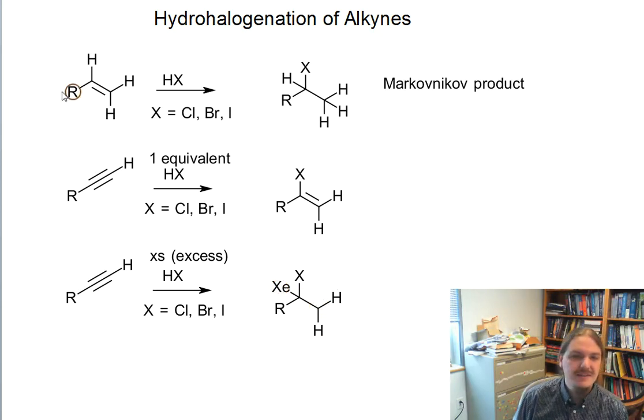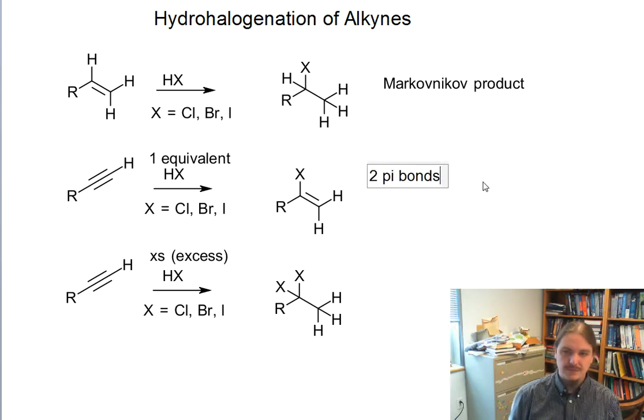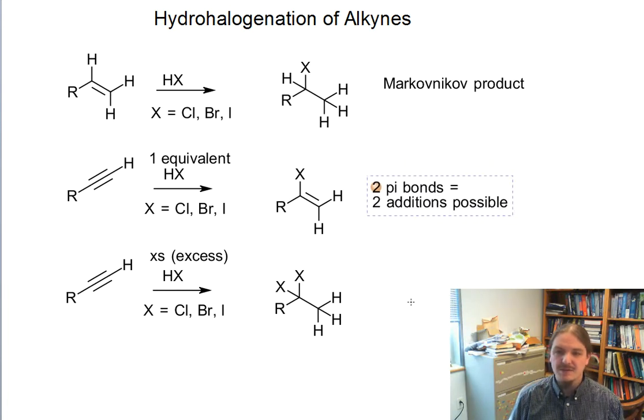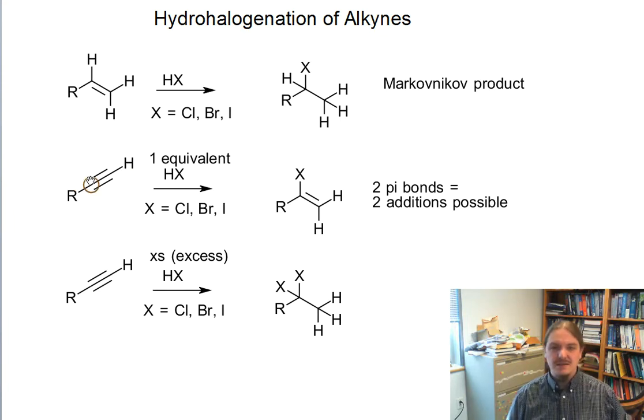you would form the mono addition product first, but that product would actually undergo a second addition reaction. We still have the other carbon-carbon pi bond that can undergo an addition reaction. And so it's possible for the alkyne, because there are two pi bonds, there are two additions possible. And by carefully controlling the conditions, sometimes we can stop after one addition reaction. And we're going to see that again when we talk about the halogenation of alkynes, and again when we talk about the hydrogenation of alkynes.